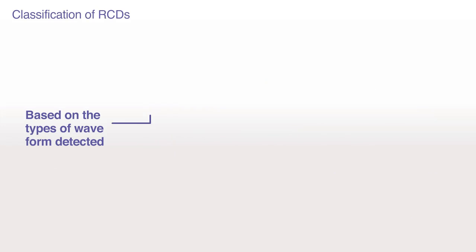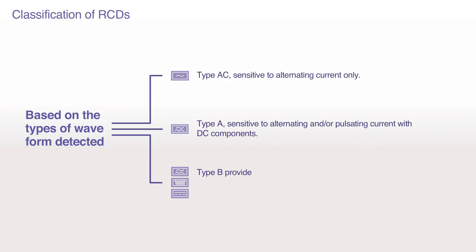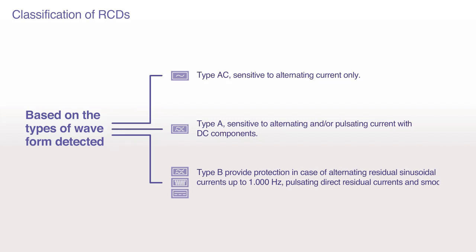Based on the types of waveform detected: Type AC, sensitive to alternating current only. Type A, sensitive to alternating and/or pulsating current with DC components. Type B provides protection in case of alternating residual sinusoidal currents up to 1000 Hz, pulsating direct residual currents, and smooth direct residual currents.